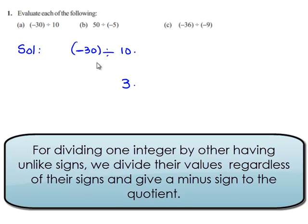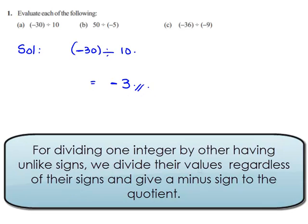When we divide two integers having opposite signs, we always get a negative sign in the answer. Therefore, negative 30 divided by 10 gives negative 3. Therefore, the answer is negative 3.